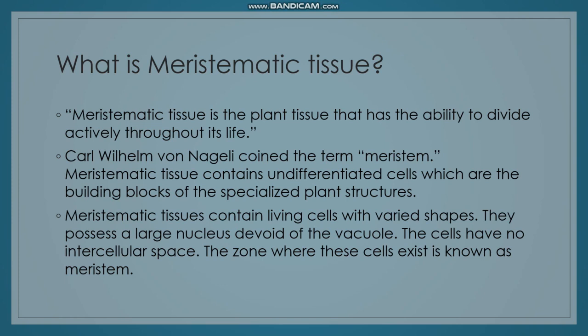The meristematic tissue has the capacity and potentiality to divide actively throughout its life. It is called meristematic tissue. This term was coined by Karl Wilhelm von Nägeli. Meristematic tissue contains undifferentiated cells which are the building blocks of specialized plant structures. The meristematic tissue contains living cells.